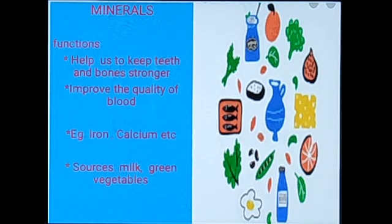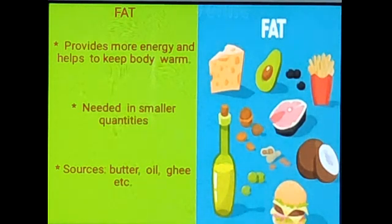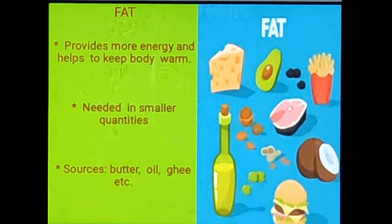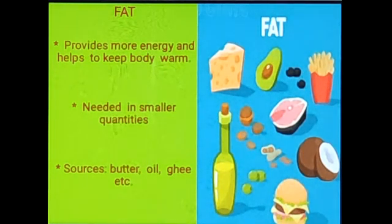Milk is a source of calcium-rich minerals, and green vegetables are sources of iron minerals. Now, the last type of nutrient is fat. The function of fat is that it provides more energy than carbohydrates and helps keep our body warm, but fat is needed in very small quantities. Sources of fat, as shown in the figure, are also nutrients required in very small quantities compared to other nutrients.